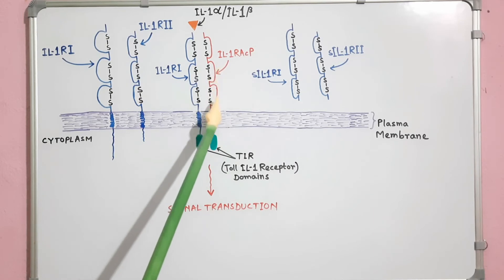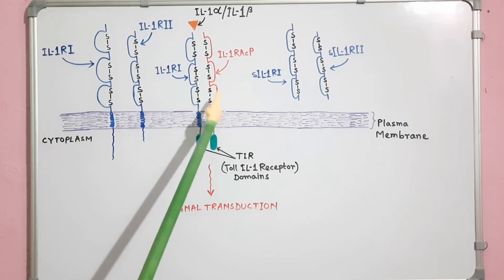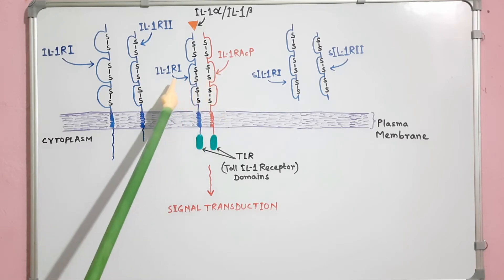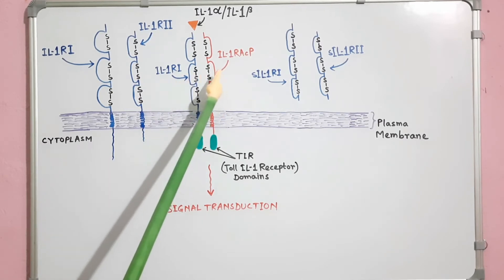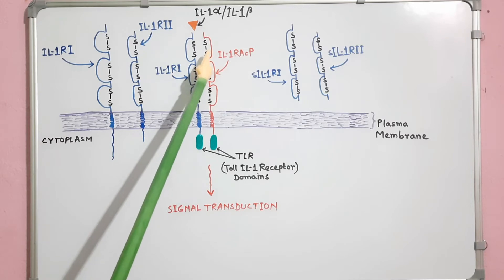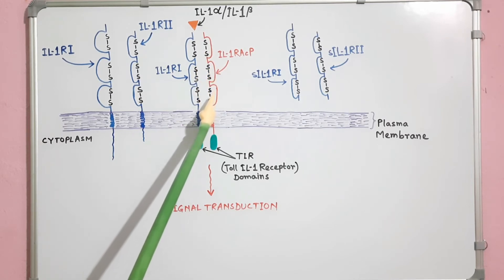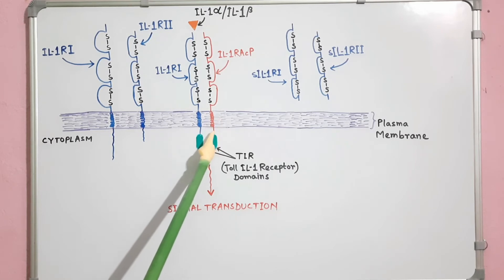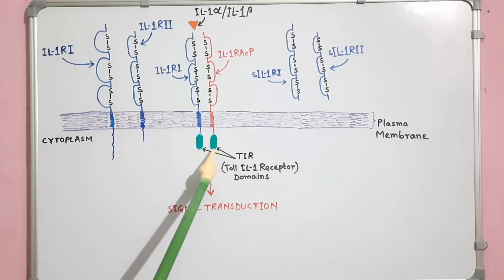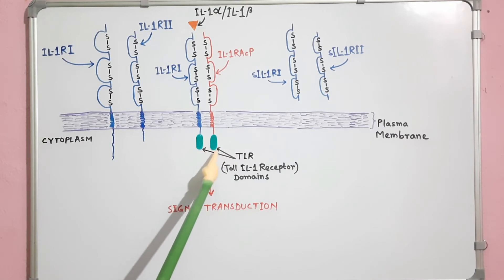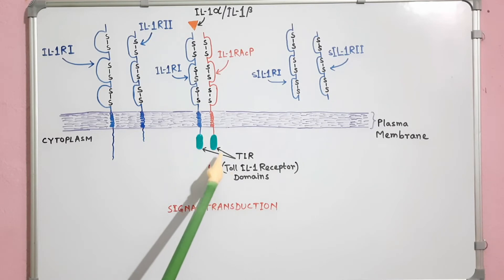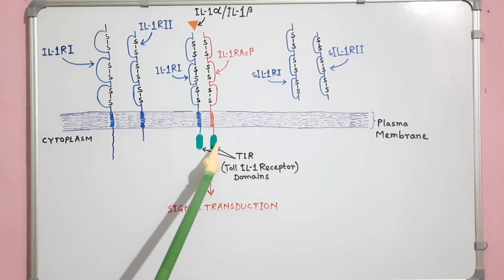Here, IL1RACP acts as a co-receptor. Like IL1R1, it is formed by three extracellular immunoglobulin-like domains, a transmembrane domain, a unique C-terminal tail, and an intracellular Toll/IL-1 receptor homology domain, or TIR domain.